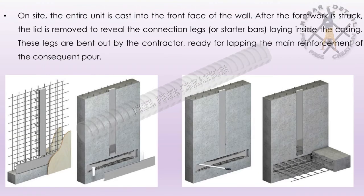On-site, the entire unit is cast into the front face of the wall. After the formwork is struck, the lid is removed to reveal the connection legs, or starter bars, laying inside the casing. These legs are bent out by the contractor, ready for lapping the main reinforcement of the consequent pour.